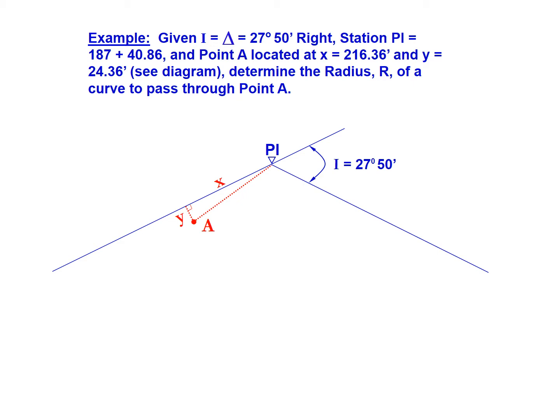Point A is located at a distance along the tangent from the PI of 216.36 feet, known as X, and perpendicular to the tangent at a distance of 24.36 feet, known as Y. We're asked to determine the radius for a curve that will pass through this point.